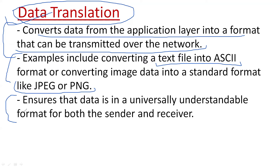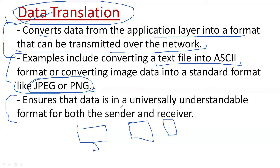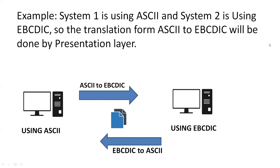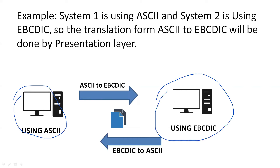Data translation also ensures the data is in a universally understandable format on both sides. For example, if you have an image, all devices — computers, tablets, or mobile phones — can understand it in JPG or PNG format. As an example, if the source is using ASCII format and the destination is using EBCDIC format, data translation will convert ASCII to EBCDIC or EBCDIC to ASCII.